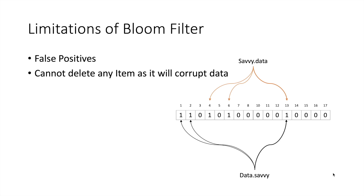In this example, savvy.data and data.savvy are two usernames stored in the bloom filter. Notice that one hash function from both usernames points to bit 13, which is set to 1. If we delete user data.savvy and reset the bits it was pointing to — bits 1, 2, and 13 — then even though bit 13 was also being used by savvy.data, we have reset it. We had no way of knowing another record was using that bit. So we have corrupted the bloom filter, and now if someone checks whether savvy.data exists, they will incorrectly think it does not exist.